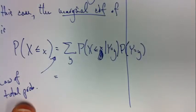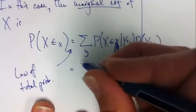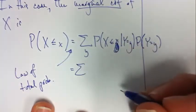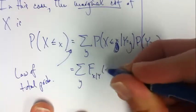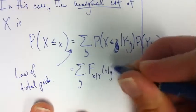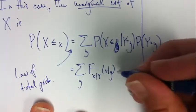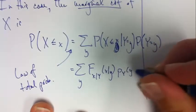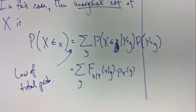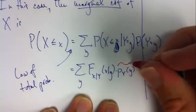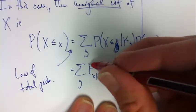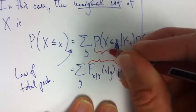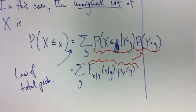Now, with our new notation though, maybe another way to express that would be the sum over y of f sub x given y of x given y, like this, times the marginal PMF of the random variable y. It's just simply because this is arguably a shorter way to write that. This means this.